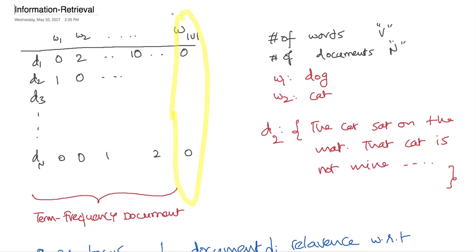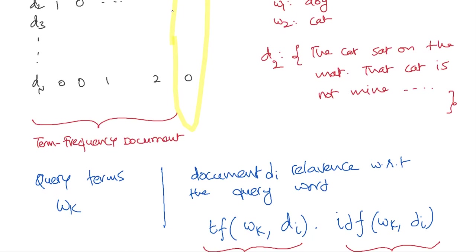Despite being sparse, this is the matrix predominantly used in retrieval systems. A query is a collection of words — generally an ordered collection — and a document is also a collection of words. How do you match between what the user's query was and what the document actually contains? You need a scoring mechanism to rank documents with respect to the presence of query words in them.